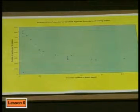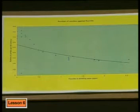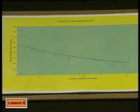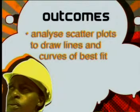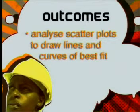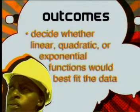Here's another question to consider: in this scatter plot, is there a trend in the plotted points, and if so, can you describe it with a line of best fit? Can you see that there is a trend in these points, but the trend isn't a straight line? We need to find another way of describing this trend. In today's lesson, we want to find different rules or functions to describe relationships between variables. By the end of this lesson, you should be able to analyse scatter plots to draw lines and curves of best fit, and decide whether linear, quadratic, or exponential functions would best fit the data.